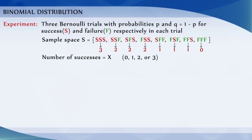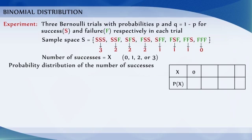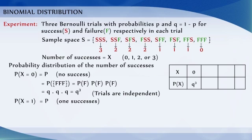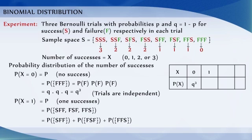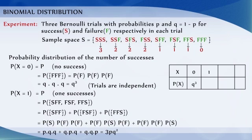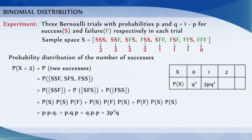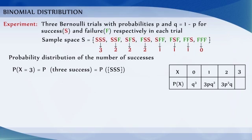The probability distribution of the number of successes for each case is given below. Probability of 0 successes is P(FFF) equal to q³, since the trials are independent. Probability of X equal to 1 is p·q² + q·p·q + q·q·p, which equals 3pq². Probability of 2 successes is 3p²q and probability of 3 successes is p³.